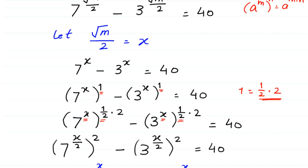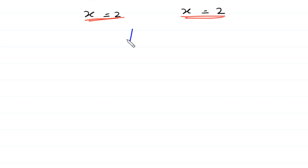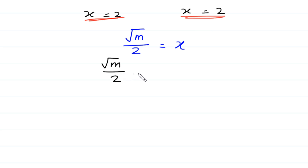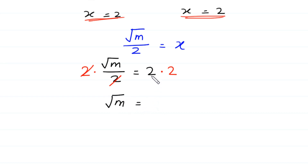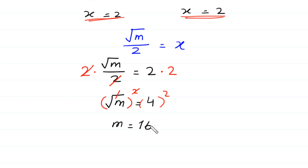Recalling our first substitution, square root of m over 2 equals x equals 2. Multiplying both sides by 2, square root of m equals 4. Squaring both sides, m equals 16. This is the final answer: m equals 16.